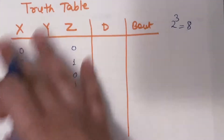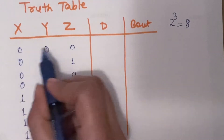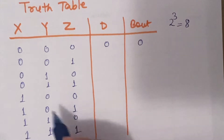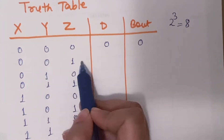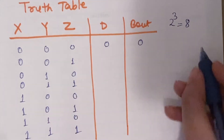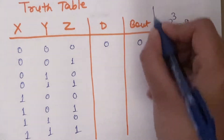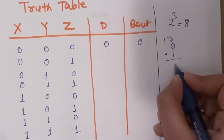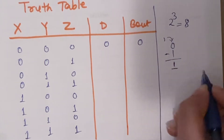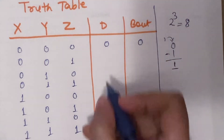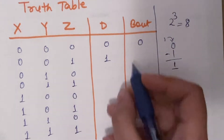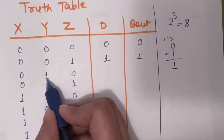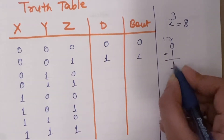Now we will fill in the difference and borrow outputs for each row. For 0 minus 0 minus 0, the difference is 0 and borrow is 0. For 0 minus 0 minus 1, we need to borrow: the difference is 1 and the borrow out is 1.